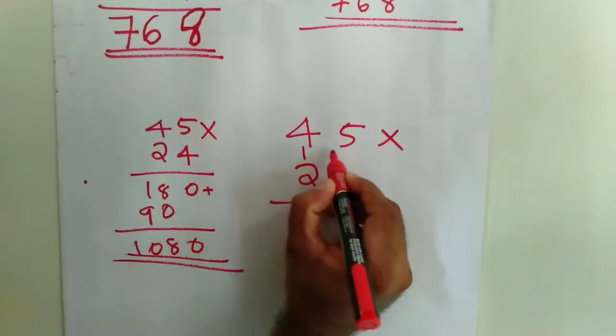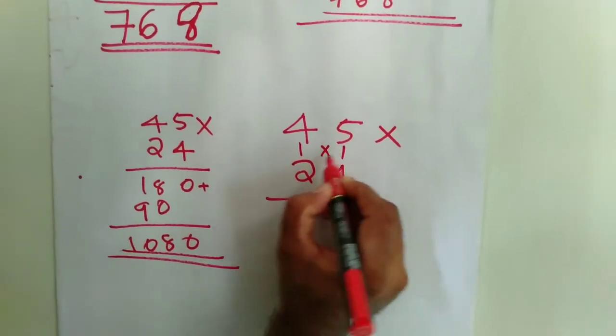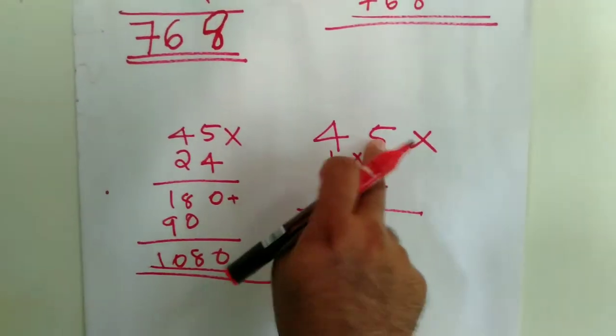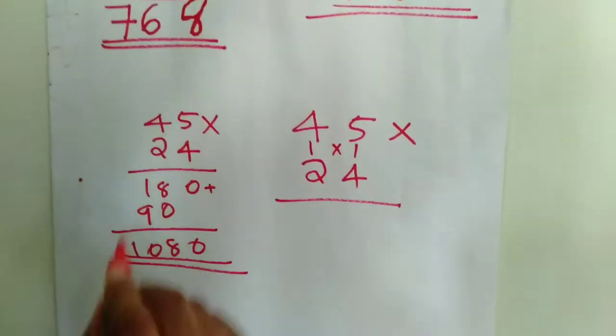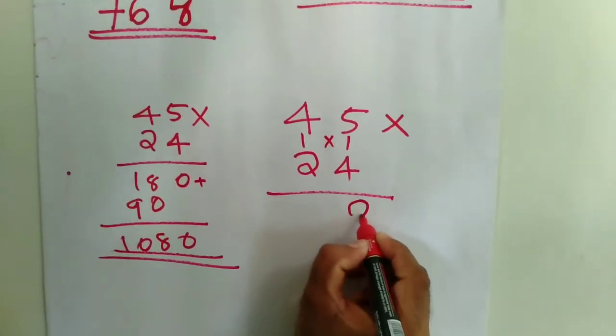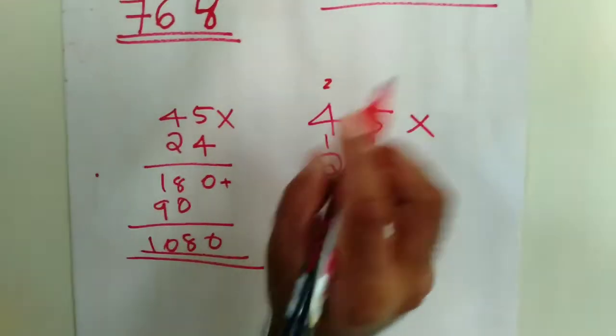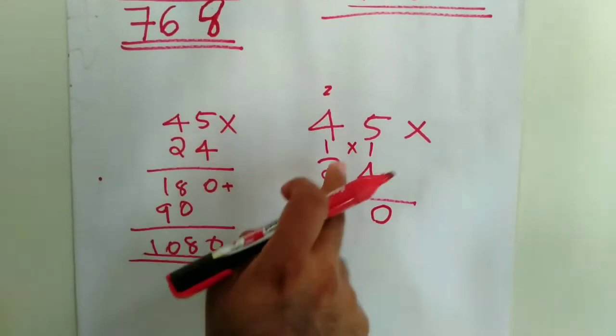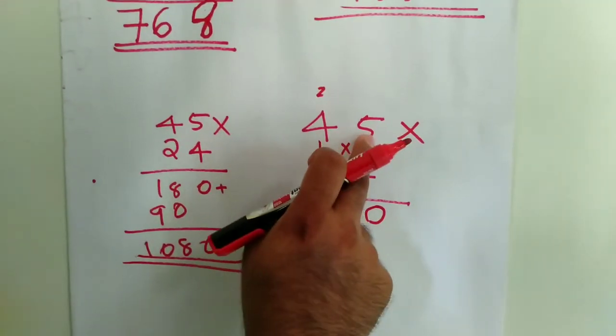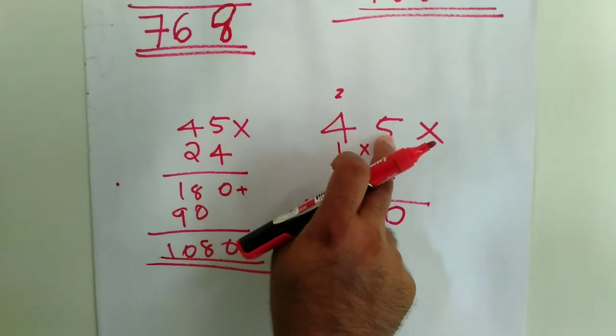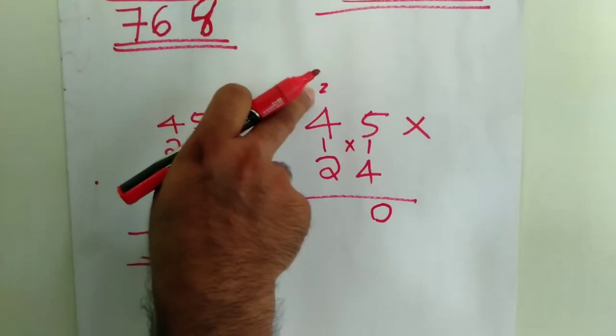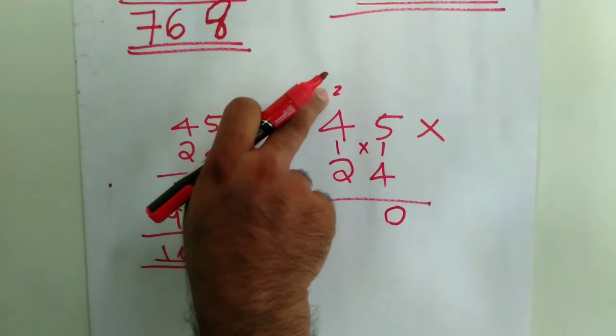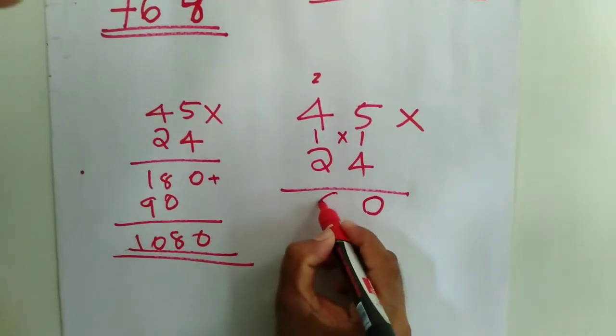I, X, I. 4 into 5, 20. 2 balance. 4 into 4, 14. 2 into 5, 10. 14, 10, 26, 28.